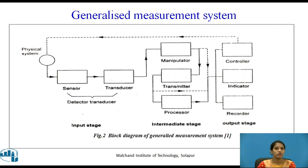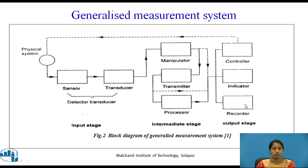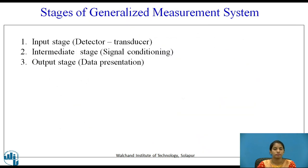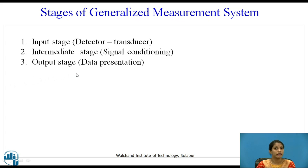Figure 2 shows the block diagram for a generalized measurement system. The first stage is called the input stage — that is, sensor and transducer. The second is the intermediate stage — that is, manipulator, transmitter, and processor. The third is the output stage — controller, indicator, and recorder. The stages are: input stage (detector-transducer stage), intermediate stage (signal conditioning stage), and output stage (data presentation stage).